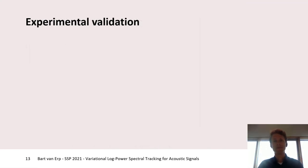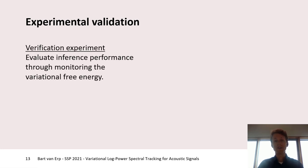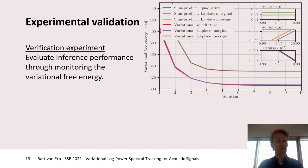Now that we have specified our generative model and described how to perform probabilistic inference within it, it's time to validate our approach. As a verification experiment, we evaluated inference performance on a synthetic dataset by monitoring the variational free energy, where the lowest value results in the best performance. We can see that the solution where we approximate the resulting marginal using moment matching by Gauss-Hermite quadrature integration performs best, followed by approximating the marginal using Laplace's method. The worst performing approach is directly approximating the message using Laplace's method. There is also a very minor difference in performance when using sum-product versus variational messages towards psi.